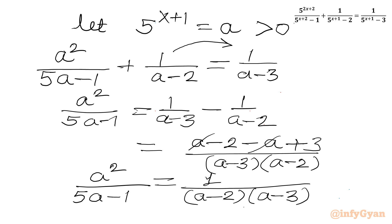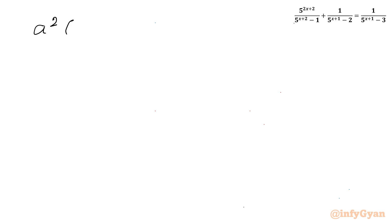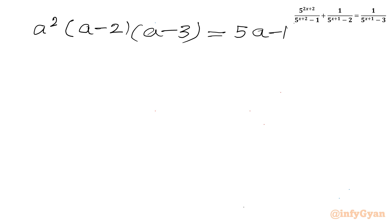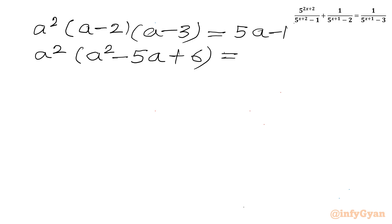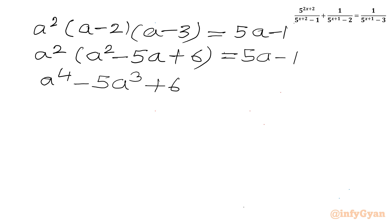Cross-multiplying gives a² · (a - 2)(a - 3) = 5a - 1. Expanding the bracket: a² · (a² - 5a + 6) = 5a - 1. This yields a⁴ - 5a³ + 6a² - 5a + 1 = 0.